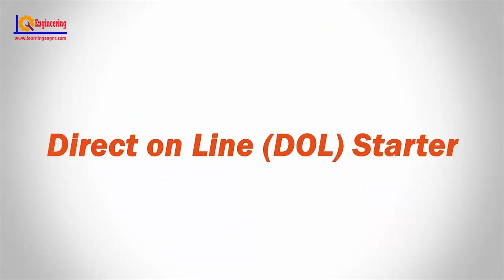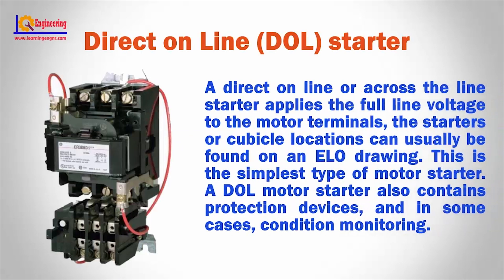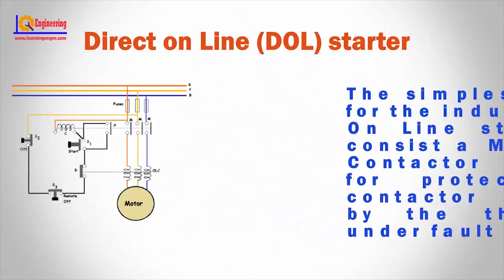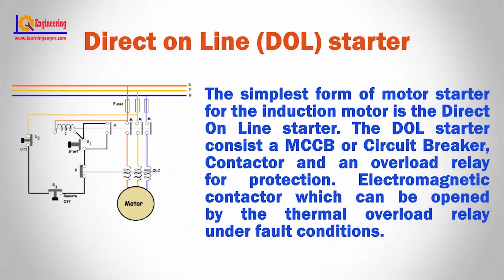Direct online DOL starter. A direct online or across-the-line starter applies the full line voltage to the motor terminals. This is the simplest type of motor starter. A DOL motor starter also contains protection devices and in some cases, condition monitoring. The simplest form of motor starter for the induction motor is the direct online starter. The DOL starter consists of a MCCB or circuit breaker, contactor, and an overload relay for protection.